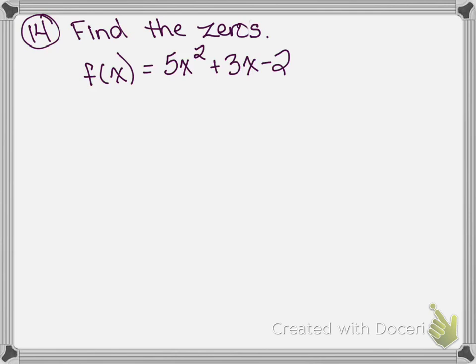Number 14, we are solving for the solutions. I think we can factor this: 5 times negative 2 gives me a product of negative 10, and my sum needs to be positive 3. My numbers are going to be negative 2 and positive 5. If you weren't able to identify this as something that can be factored, you can always use the quadratic formula.